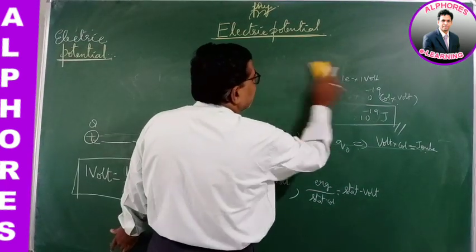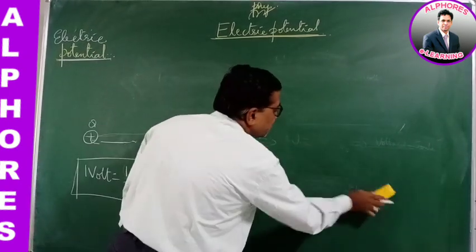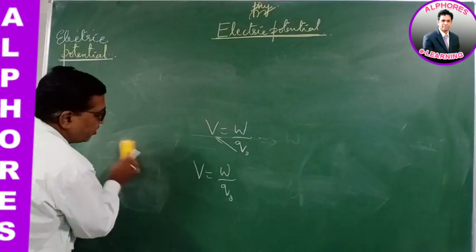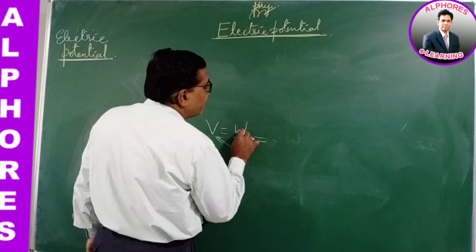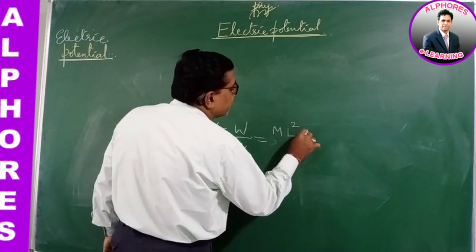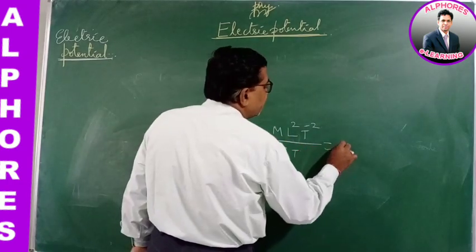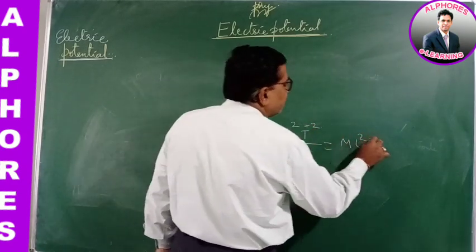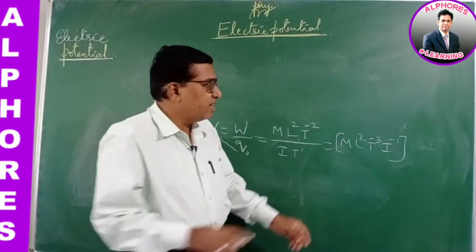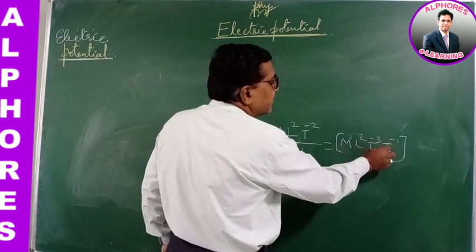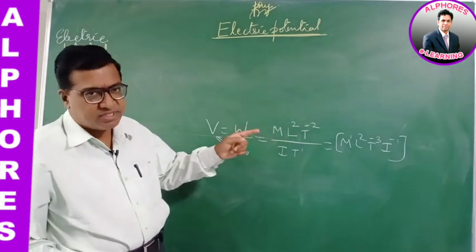Electric potential is defined as the amount of work done per unit charge: V = W/Q. Units are joule per coulomb or volt. The dimensional formula: work done is ML²T⁻², charge is I·T, so electric potential has dimensional formula M¹L²T⁻³I⁻¹.